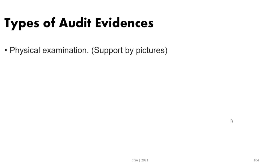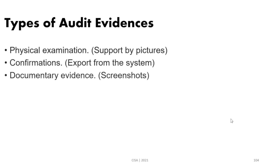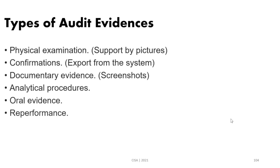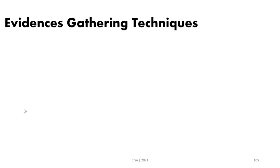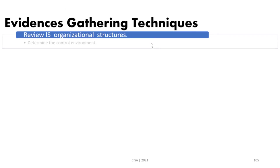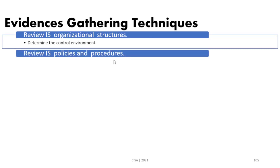We have many types of evidence. The first type is physical examination, which can be supported by pictures, confirmations, and documentary evidence. Other types include analytics procedures, oral evidence, re-performance, and observatory evidence — when we observe a specific function. All of these are evidence gathering techniques.